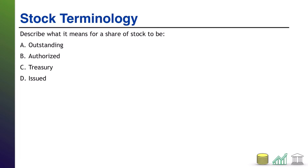Welcome back. I am going to take these in the logical flow of a stock's life cycle, starting with authorized. What does it mean for a share of stock to be authorized? That simply means it has been approved by the company to be issued. It doesn't mean it's been issued to investors or that it will be — it simply means that stock has been approved for issuance should the company decide to do so. Next is issued. Issued means that the stock has actually been sold to investors. It does not necessarily mean that the investors still have it — it simply means it was sold to investors at some point.